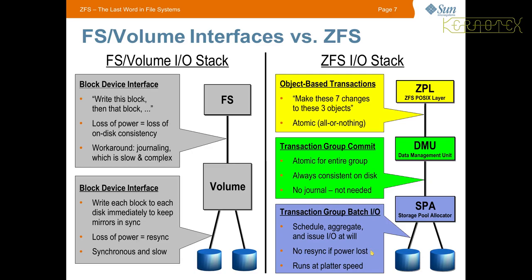At the storage level there's a scheduler which can aggregate and issue IO at will — it can read from one disk while another is busy, or use a mirrored disk. There's no need to re-sync if power is lost, and it runs at platter speed. It's essentially an intelligent mechanism that knows intimately about the disks, what data they've got, and so on.